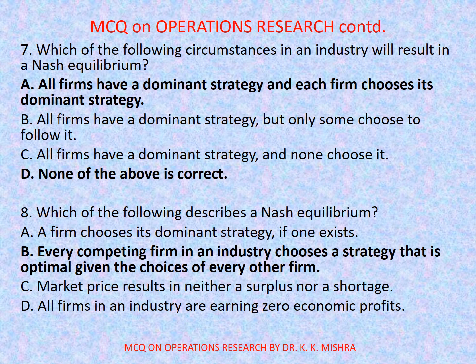Question number 7: Which of the following circumstances in an industry will result in Nash equilibrium? Options are: a) all firms have a dominant strategy and each firm chooses its dominant strategy, b) all firms have a dominant strategy but only some choose to follow it, c) all firms have a dominant strategy and none choose it, d) none of the above is correct. Correct option is a) all firms have a dominant strategy and each firm chooses its dominant strategy.